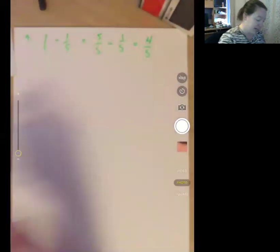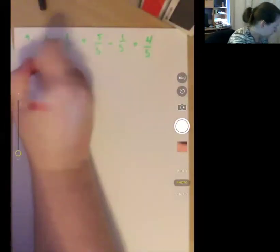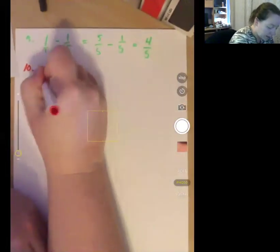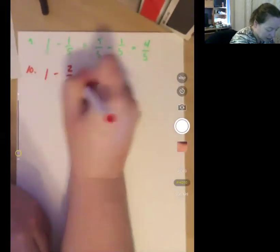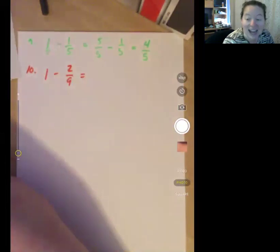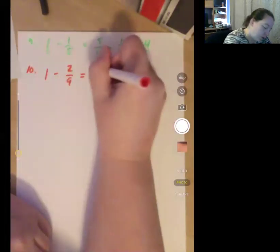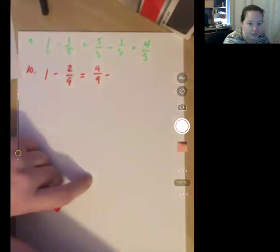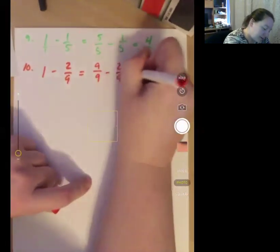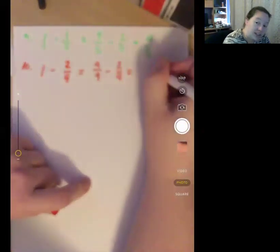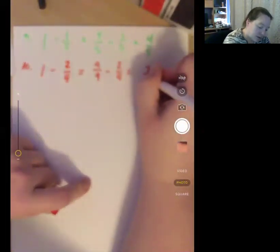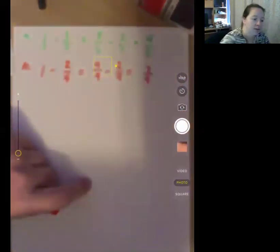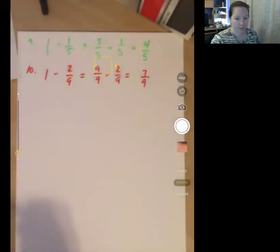Number 10, 1 minus 2 ninths. Again, I cannot do that the way that it's currently written. But I know that any number over itself is 1, so I'm going to change that 1 into a 9 over 9 minus 2 ninths. 9 minus 2 is 7 over 9.